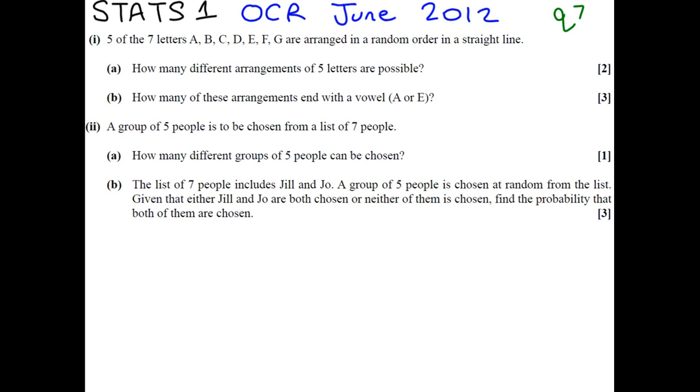So, in this question, it's about permutations and combinations. We have 7 letters, A to G, and they're arranged in a random order in a straight line.